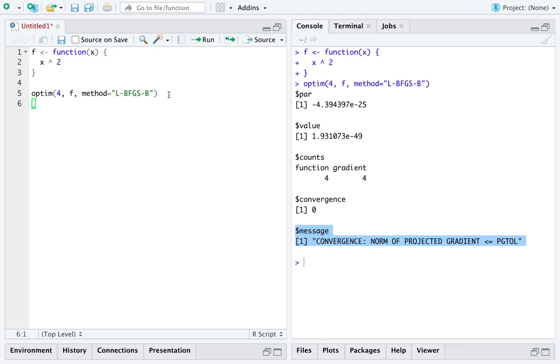Generally, what we're going to be interested in is the element named par. So if you want, you can extract that immediately from the return object from optim, and you can see that we just get out that specific scalar itself.